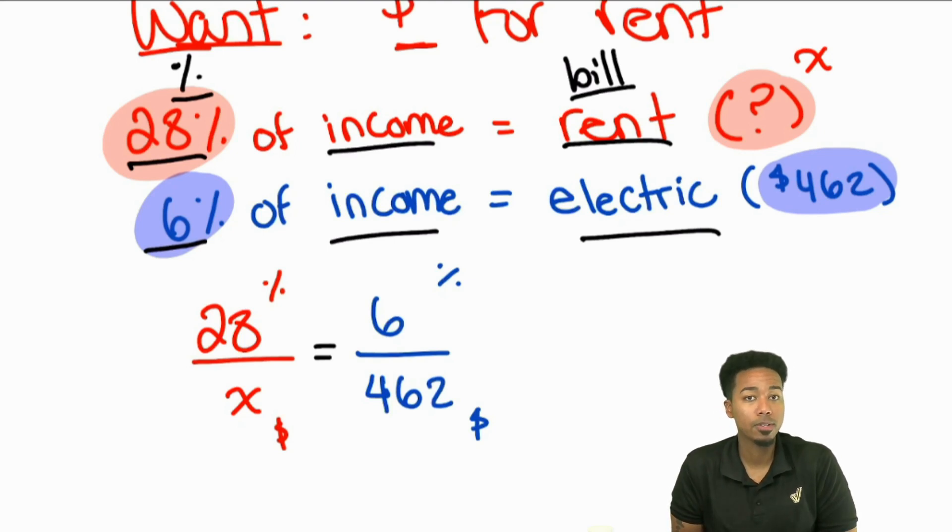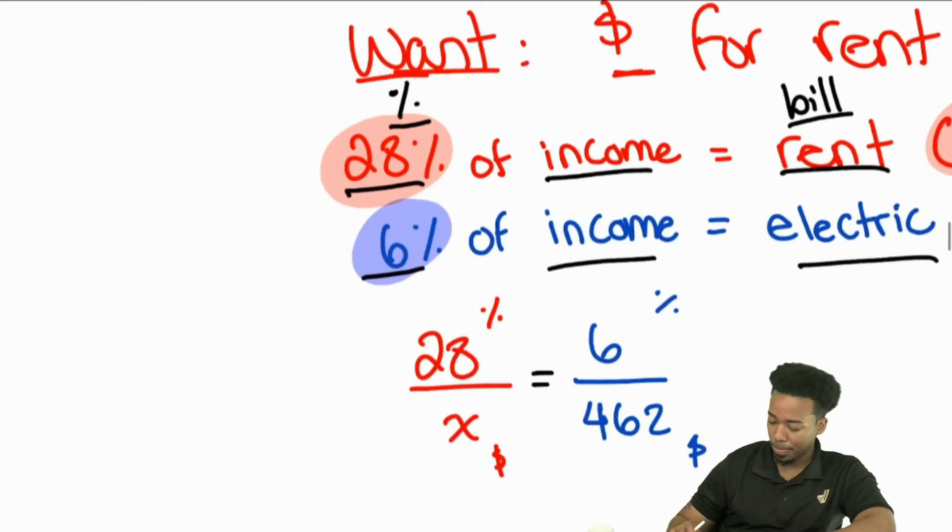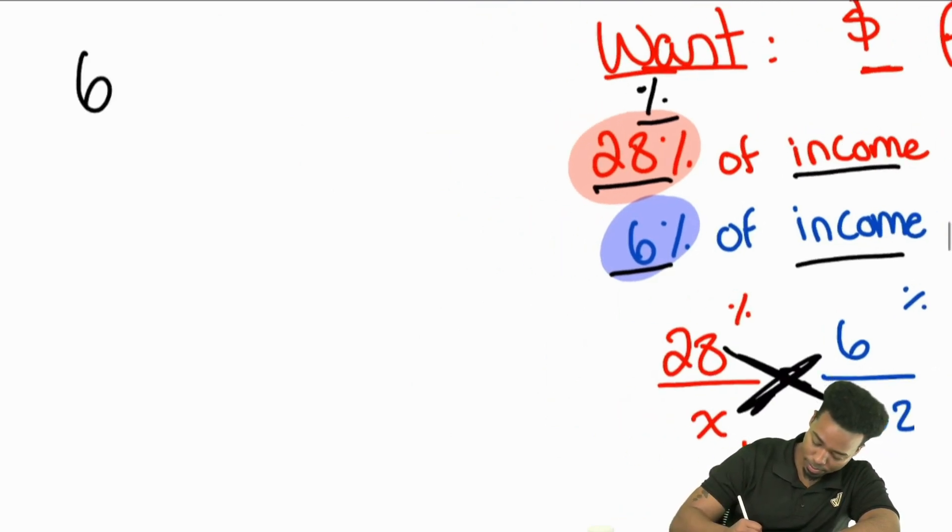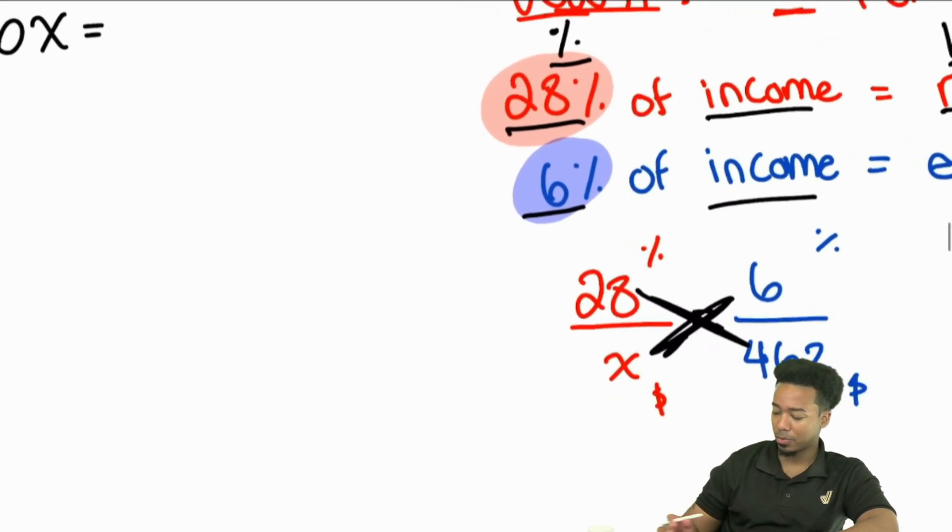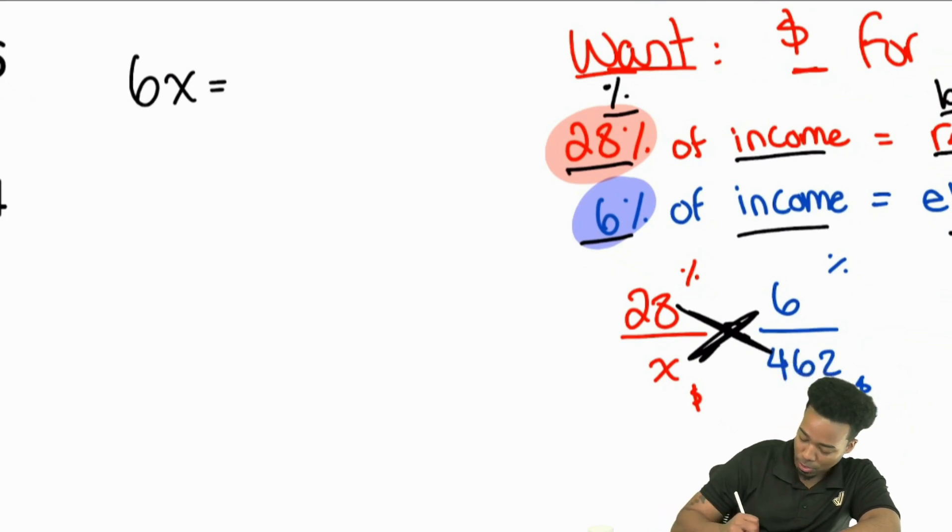So now that we have the proportion set up, typically a lot of people like going with the cross multiplication and division method. I'm going to go ahead and do that. There are some mental math ways that we could set up, but we're just going to go ahead and keep it fairly simple for now. And we'll simply go ahead and cross multiply and divide. So with that cross multiplication, we have X times six. That's going to be 6X. And then we have 28 times 462, who knows that off the top of their head? Nobody didn't think so. So we're going to go ahead and calculate by hand here, just like if this was the test, if we needed to. So 462 multiplied by 28.